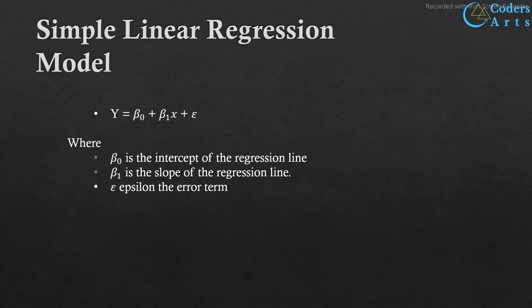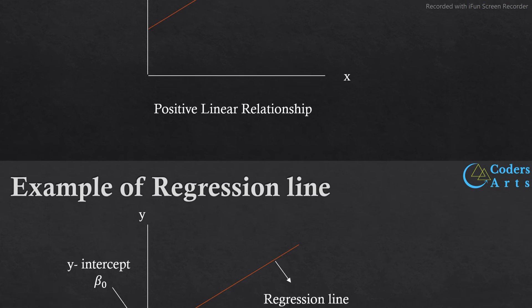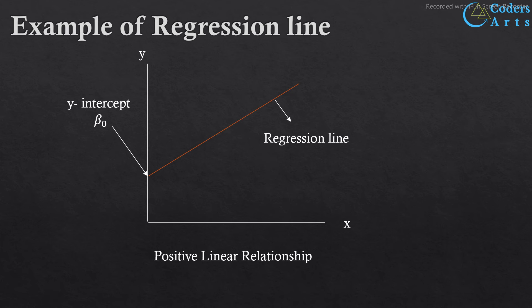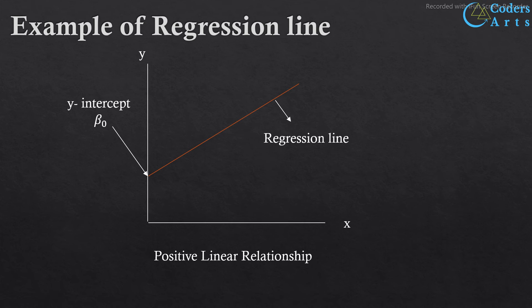Let's take a look at some examples of the regression line. Here we have an example showing a line sloping upward. Because the line slopes upward, it shows a positive or increasing relationship between x and y — as x increases, y also increases. The beta 1 slope will be a positive number. The line itself is called the regression line, and the y-intercept beta 0 is where the regression line hits the y-axis.